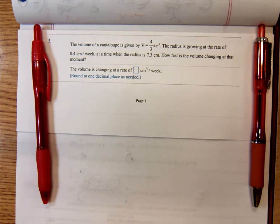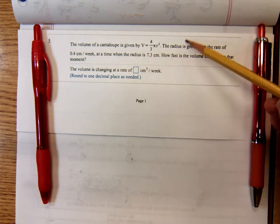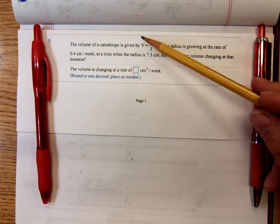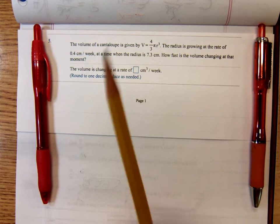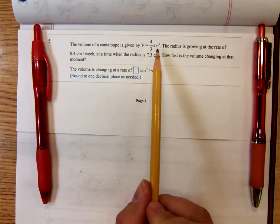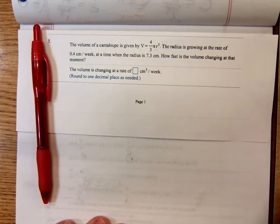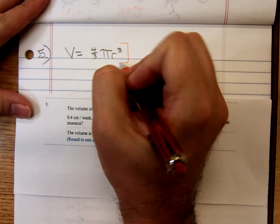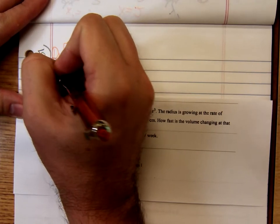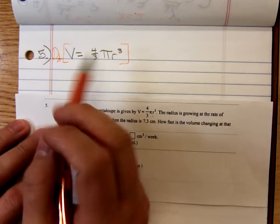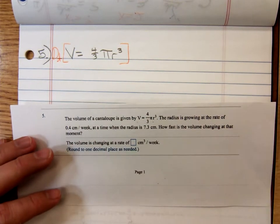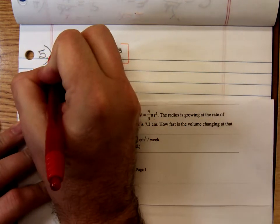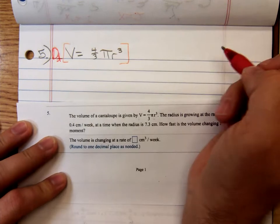So remember with related rates we're differentiating with respect to time. So maybe before we start analyzing these numbers they've given us, maybe we should go ahead and differentiate this thing with respect to time. Realize our variables are v volume and r radius. And I've written that down here. I'm going to differentiate this with respect to time. Remember that little subscript there. When you're differentiating at the, oh that orange isn't showing very well, is it?